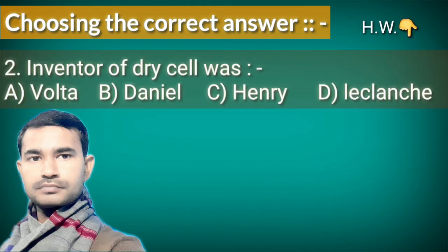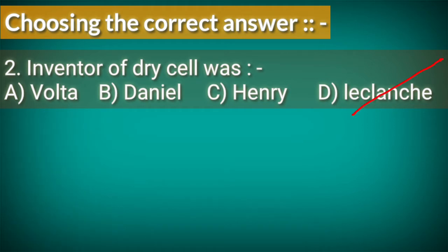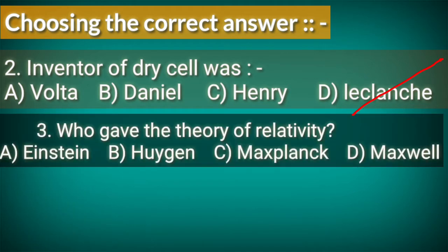Second question: the inventor of the dry cell was discovered by A. Volta, B. Daniel, C. Henry, D. Leclanché.